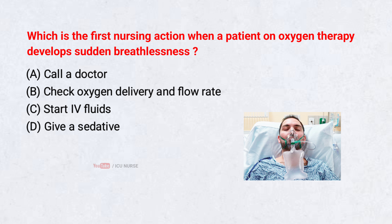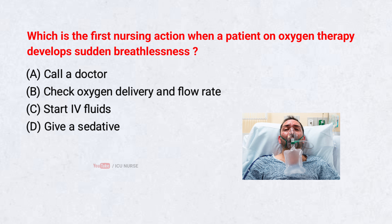Which is the first nursing action when a patient on oxygen therapy develops sudden breathlessness? A. Call a doctor. B. Check oxygen delivery and flow rate. C. Start IV fluids. D. Give a sedative. Correct answer: B. Check oxygen delivery and flow rate. The nurse must confirm that oxygen tubing, mask, and flow rate are working properly before escalating care, since equipment failure is common.